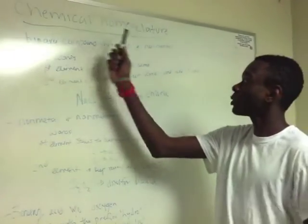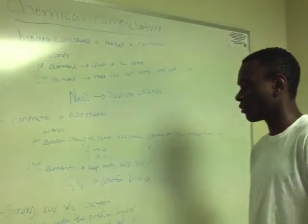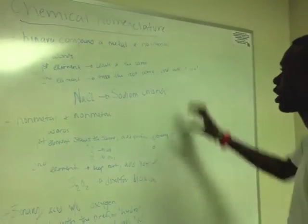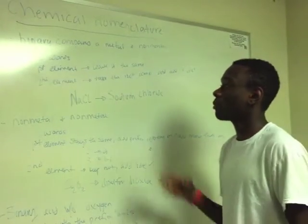Our second topic is chemical nomenclature. There are different types of chemicals. The first one we're going to talk about is binary compounds: a metal and a non-metal.